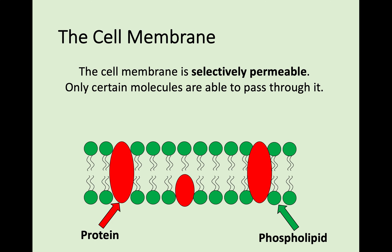The cell membrane is termed selectively permeable, and that's a really important term, because it means that some molecules can pass through the cell membrane in or out of the cell, and some molecules can't. It has some form of control over what can pass through it.